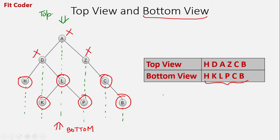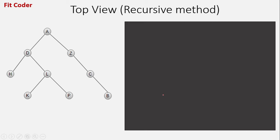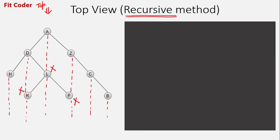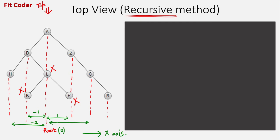The top view can be found both by recursive method and by iterative method - here we'll focus on the recursive approach. The algorithm finds the horizontal distance of all nodes from the root. This is the vertical line from the root node, and we find the horizontal distance for each node. The root coordinates are 0. Going left the distance will be minus 1, minus 2; on the right side it will be plus 1, for c it will be 2, and for b it will be 3. So a is at 0, z is at 1, c is at 2, b is at 3.